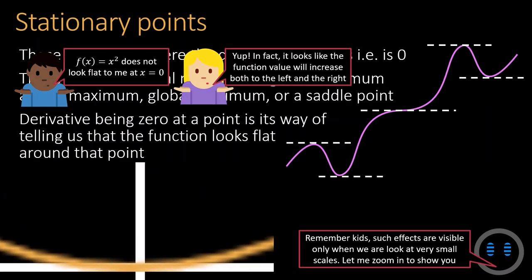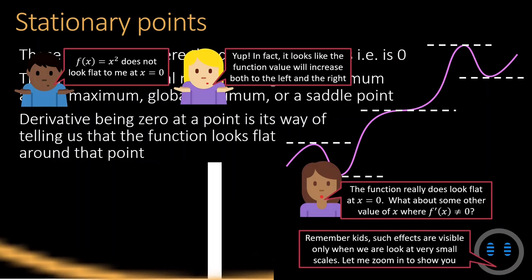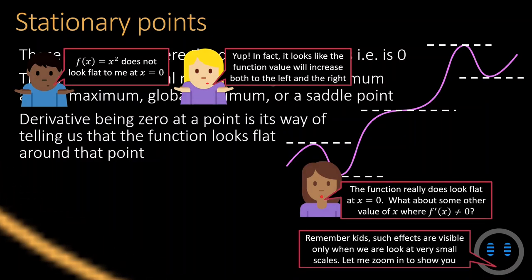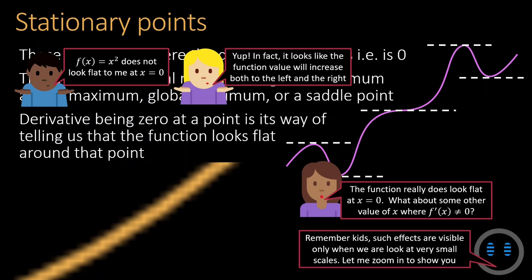Upon zooming in, we find that the function does look flat in the region where the derivative was zero. However, at this point you might be suspicious that maybe all parts of the function look flat because we zoomed in so much. But a bit of looking around confirms that this is not the case. Portions of the function, where the derivative was non-zero, do not look flat at all even if we zoom in.